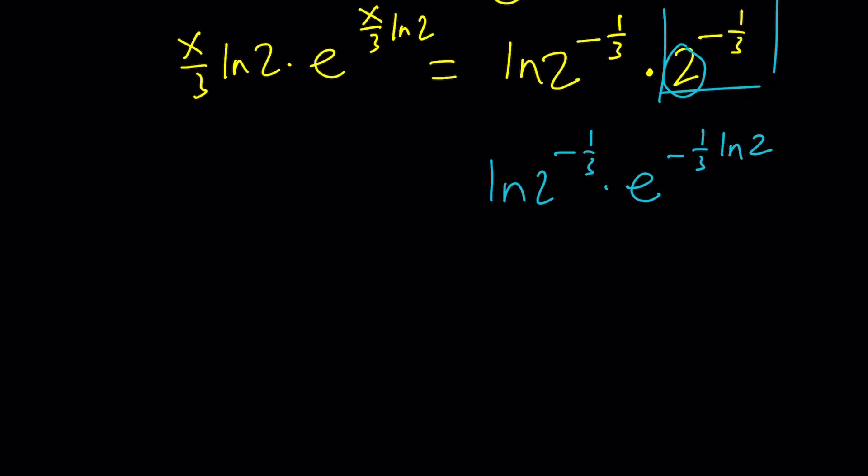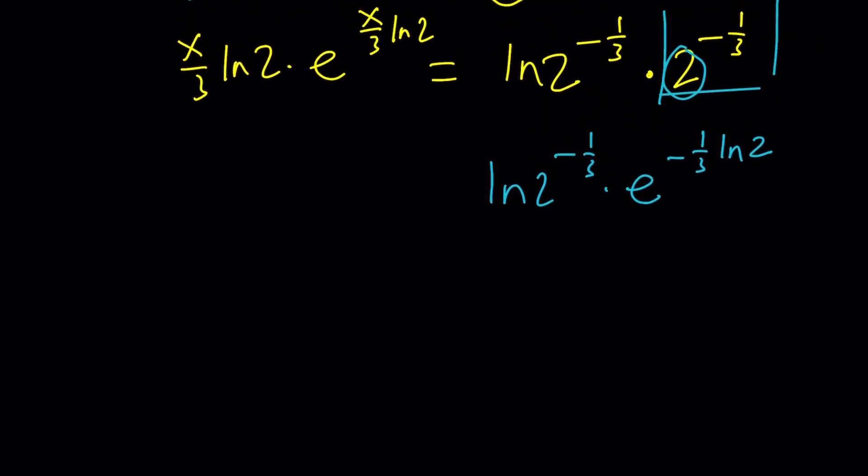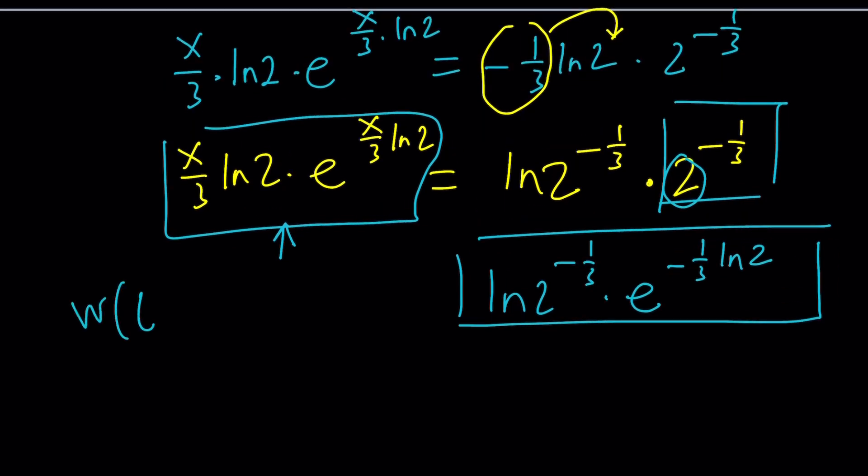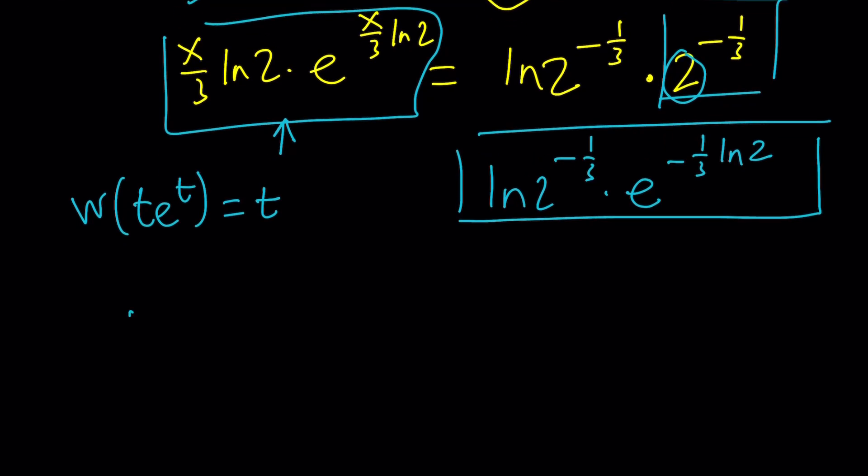The final stage is writing this using Euler's number. With the same identity, 2 equals e to the power ln 2. So that gives us e to the power negative 1 third ln 2. At this point, we got this equals this. If you look at it carefully, the left-hand side is appropriate for Lambert's W function. That's the special function we're going to use. Lambert's W function takes an input like t times e to the t, and the output is t under certain conditions. But this is not always one-to-one, so this is multi-valued.